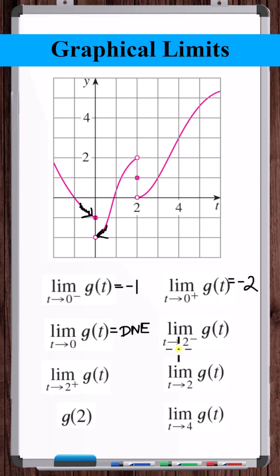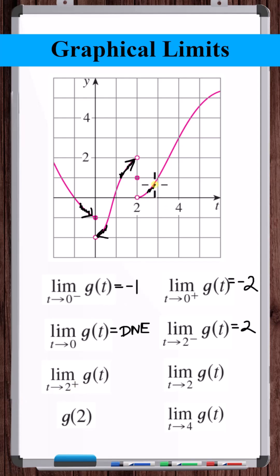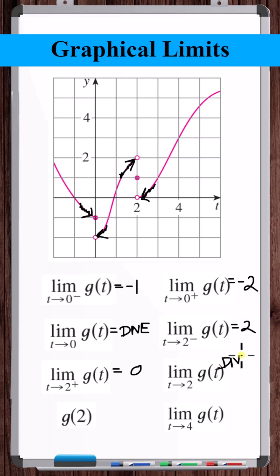The limit as t approaches two from the left — coming from the left, the function is approaching 2. The limit as t approaches 2 from the right — coming from the right, the function is approaching 0. As t approaches 2 in general, coming from the left and the right are two different limits, so this does not exist.